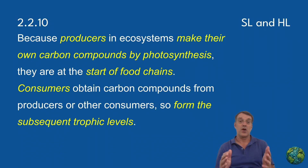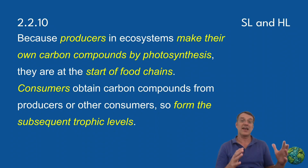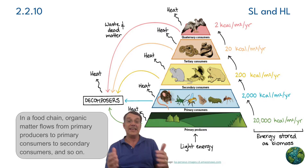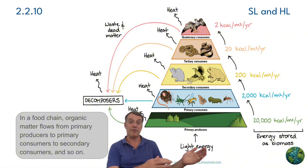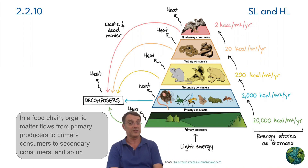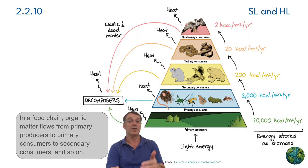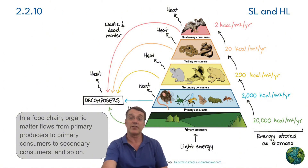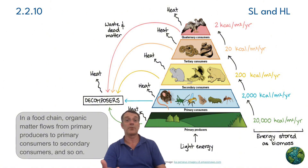In an ecosystem, all of these feeding relationships create food chains where organic matter and energy flow from producers through different levels of consumers. Each level in the chain is called a trophic level. Producers form the first trophic level, followed by primary consumers — usually herbivores — then secondary consumers, often omnivores or sometimes carnivores, and then tertiary consumers, which are carnivores. Sometimes we'll even have apex predators, which are always carnivores.